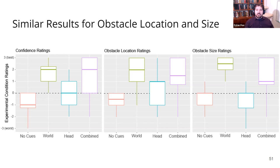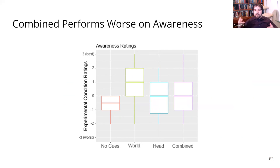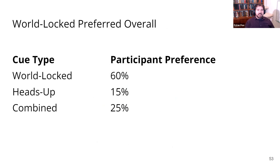Where we found a difference in this pattern was with awareness. Here, world-locked was still pretty good, but the combined cues had dropped down to be on par with the heads-up cues — having both types of cues at once was really taxing the level of awareness people had for the rest of what was happening around them. Looking at these results, it is perhaps not too surprising that overall people tended to prefer world-locked cues: 60% of our participants chose world-locked, only 15% picked heads-up, and 25% picked combined. There were some people that favored heads-up and combined, showing these will be differently effective for different people with different vision.